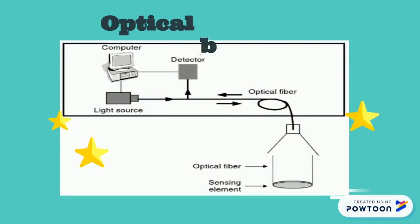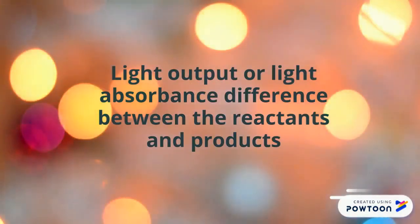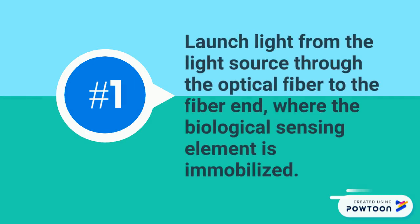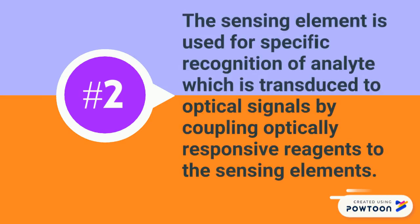An optical biosensor is based on light output or light absorbance difference between the reactants and products. One example is the fiber optic biosensor. Light is launched from the light source through the optical fiber to the fiber end, where the biological sensing element is immobilized. The sensing element is used for specific recognition of the analyte, which is transduced to an optical signal by coupling an optically responsive region to the sensing element.